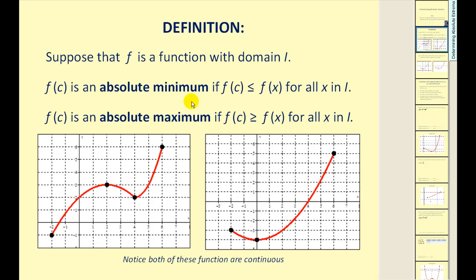f of c is an absolute minimum if f of c is less than or equal to f of x for all x in the interval. Remember that f of c is a y value, so if this y value is less than or equal to all other y values on the interval, it's an absolute minimum. And f of c is an absolute maximum if f of c is greater than or equal to f of x for all x in the interval. It may help to think of finding the max and mins by finding the highest and lowest point on the intervals.